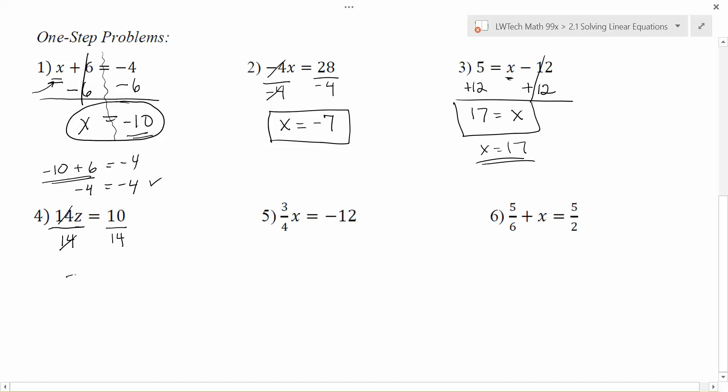So here the 14s cancel out, and I'm left with z. On the right hand side, I go to do 10 divided by 14, and it doesn't go in evenly. This may seem a little intimidating or confusing at first, but just remember that division bars are also fractions. So one way that we can think of this is having 10/14 as a solution, and then we just like to have our answer in simplest form. So we can reduce this particular fraction, because 2 goes into both the top and the bottom, and I can get z equals 5/7 as my final solution for this one.